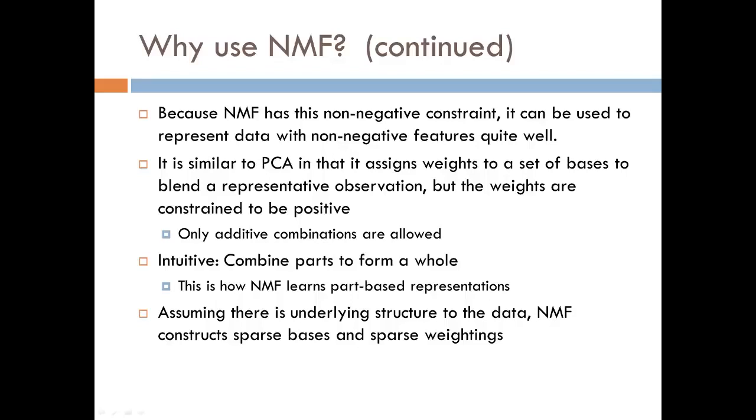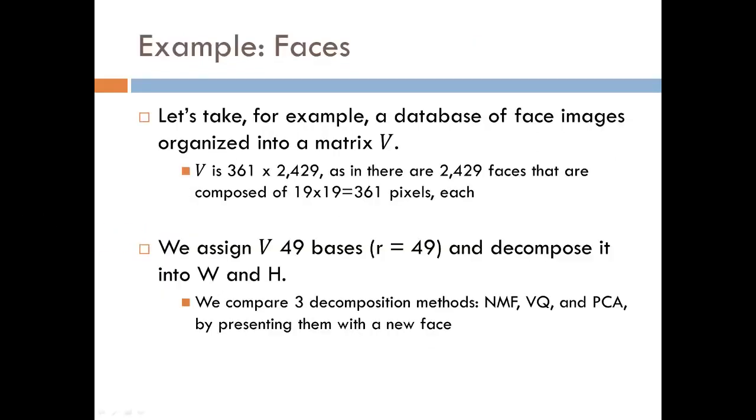Now, what I mean by this will become clearer in the following example from a paper by Li and Sun. So, say we are given a database of images of faces. Each image is 19 by 19, meaning there are 361 pixels in each image.